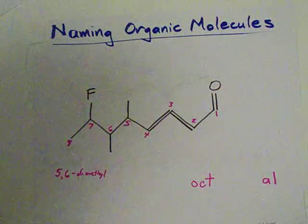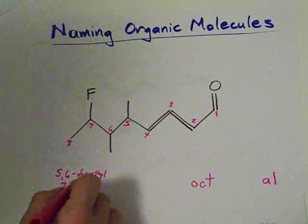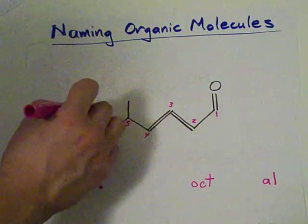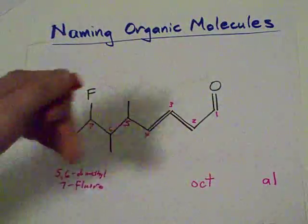One on carbon five, one on carbon six. And I've got a fluoro on number seven. See? That's all the side chains.